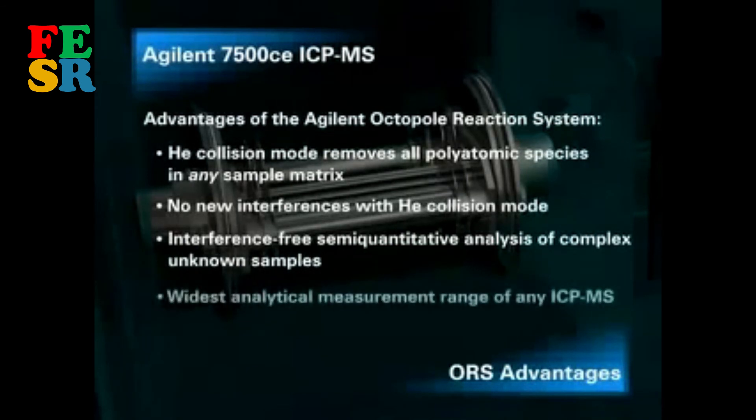The 7500 CE can measure mercury at single-figure parts-per-trillion, plus sodium at greater than 1,000 parts-per-million in the same analytical run.